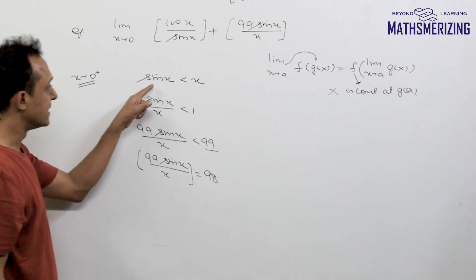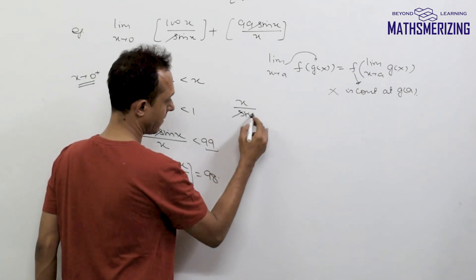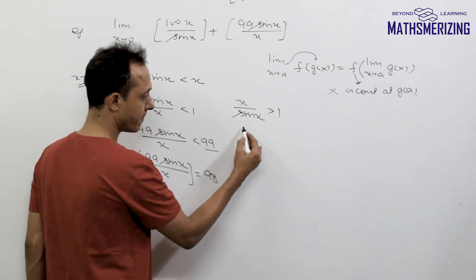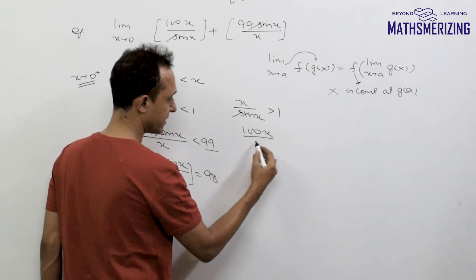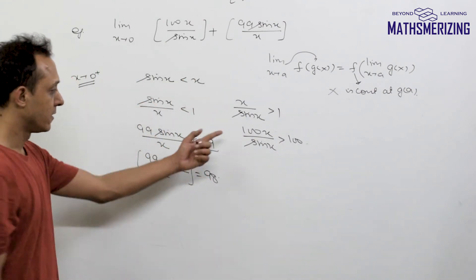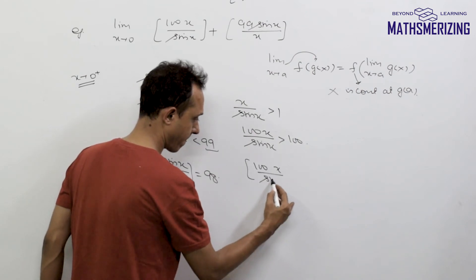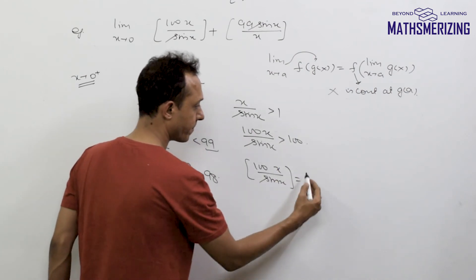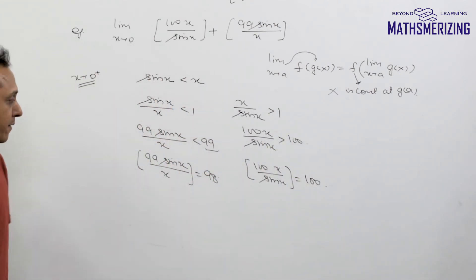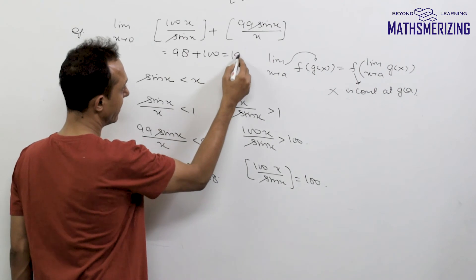Now for the other expression: when sin(x) < x, then x/sin(x) > 1. If I multiply by 100, then 100x/sin(x) > 100. Taking the greatest integer function, this will be some number greater than 100, so this is simply 100. Adding them both: 98 + 100 = 198.